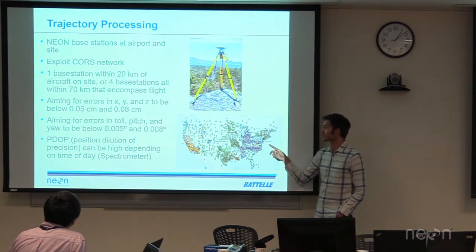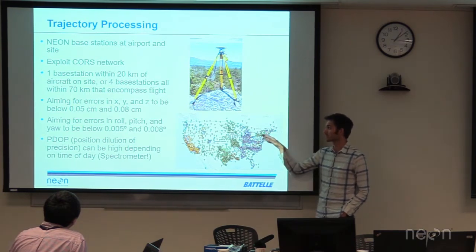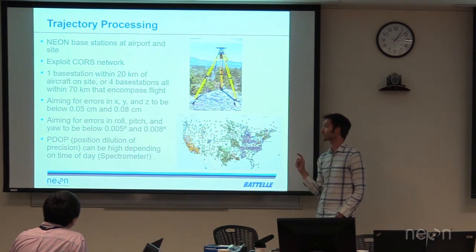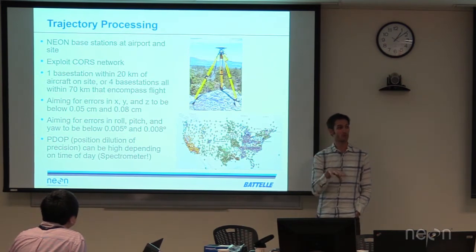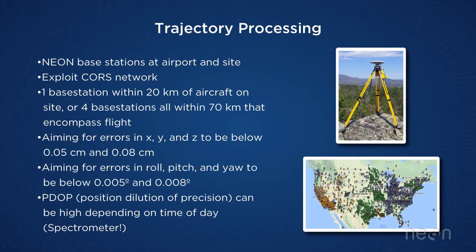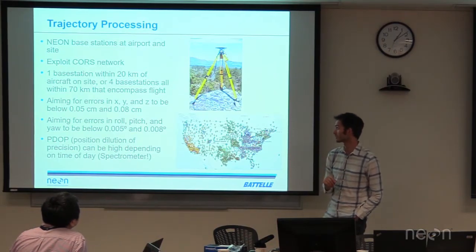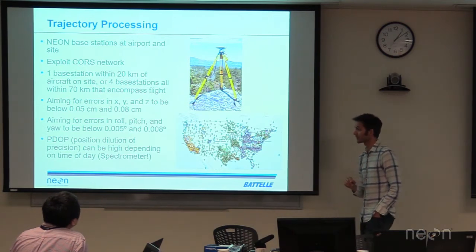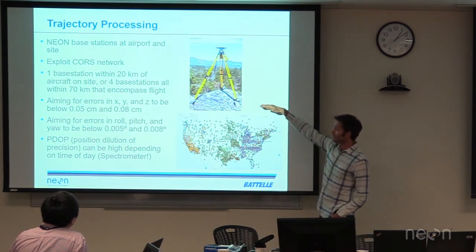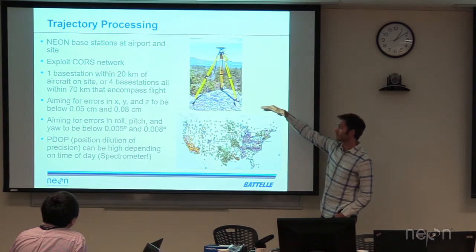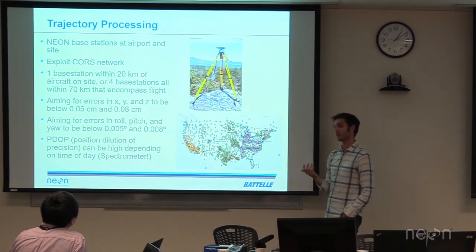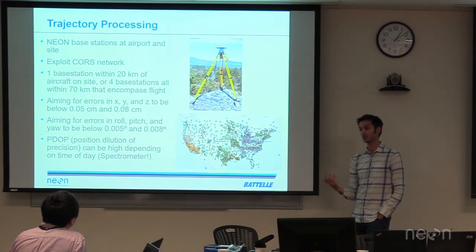If we go to a site and find that the distribution of CORS stations doesn't give us a baseline of less than 20 kilometers between the reference station and the aircraft, we set up our own GPS base station to correct the airborne trajectory. For the most part, unless we're transiting from the airport to the site, we'll never have base stations more than 20 kilometers from the aircraft. We aim for GPS trajectory errors between 5 and 8 centimeters.